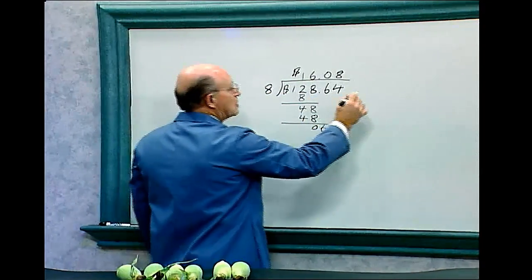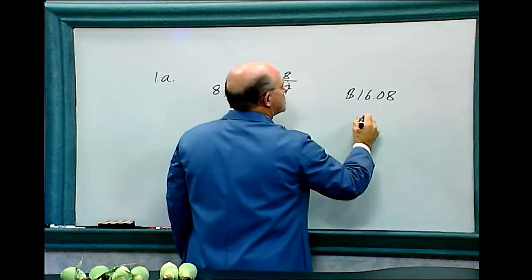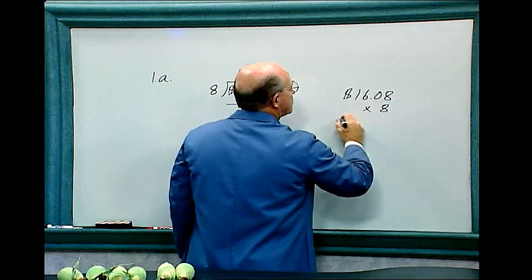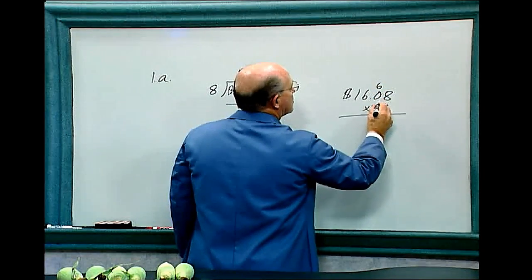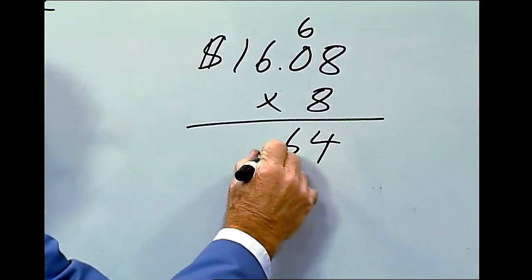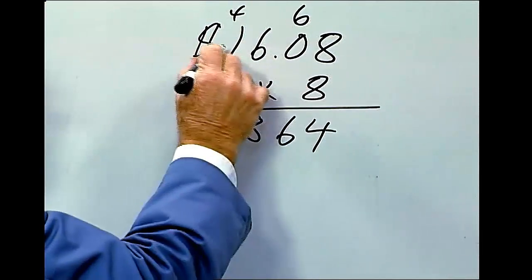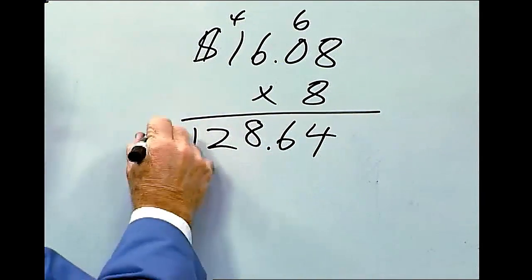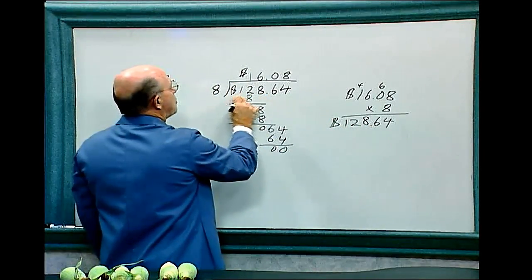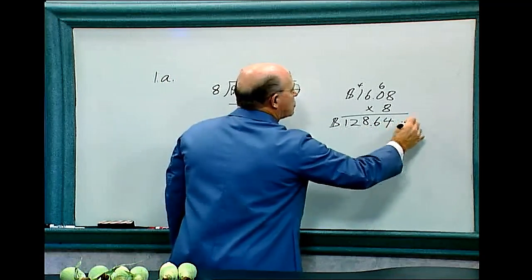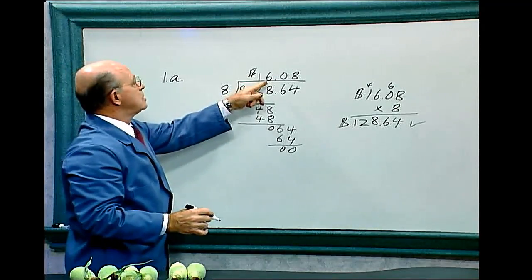Let's check the answer. Sixteen dollars and eight cents times eight: eight times eight is sixty-four — put down four, carry the six. Eight times zero is zero, plus six is six. Eight times six is forty-eight, carry the four. Eight times one is eight, plus four is twelve. That gives us one hundred and twenty-eight dollars and sixty-four cents, which checks with what we were dividing with. So $128.64 divided by eight equals $16.08.